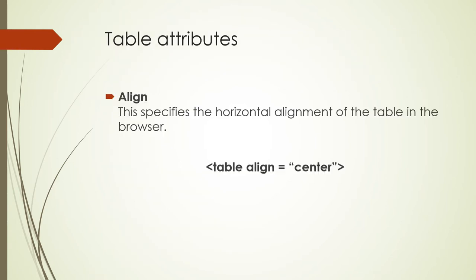There are various table attributes that we can add to the table tag to change the way our table looks. The first one is align, which specifies the horizontal alignment of the table in the browser. This can be center aligned, left aligned, or right aligned. In the example, we've got our table tag with align equals center added.